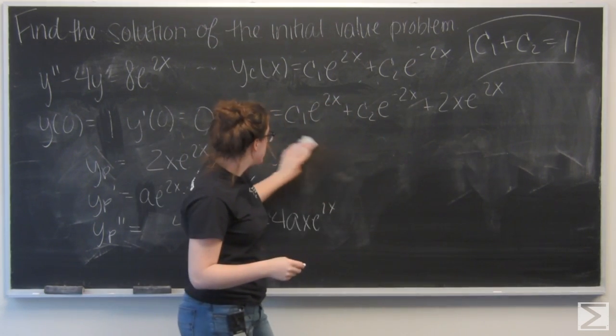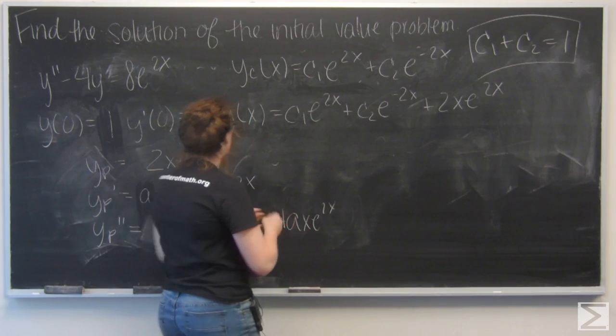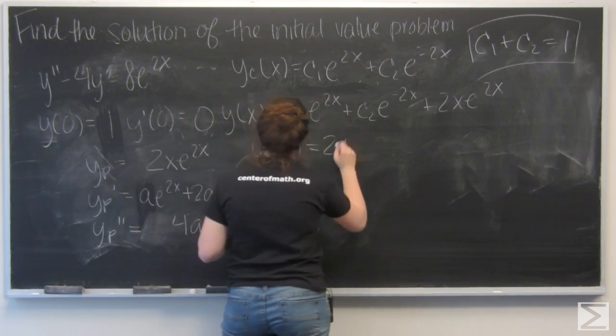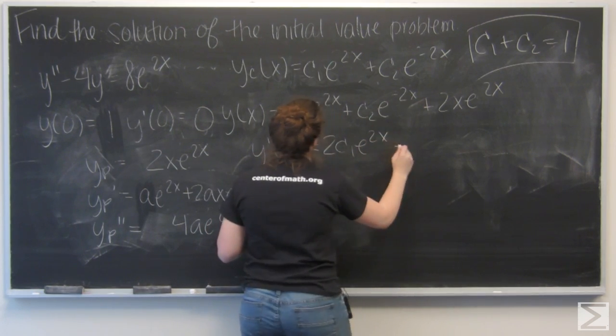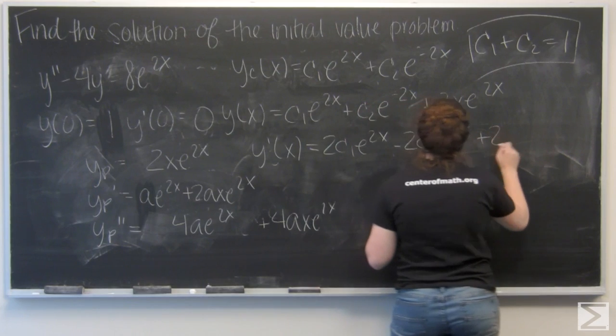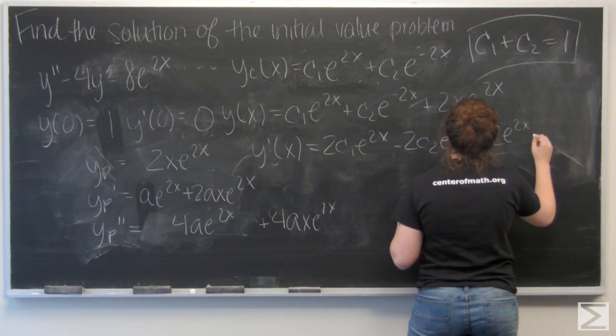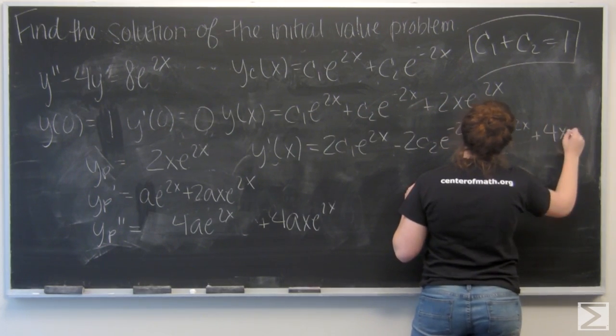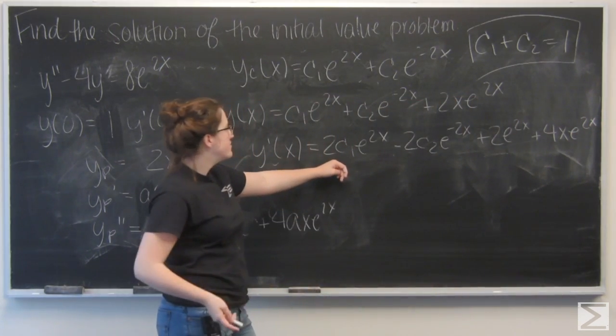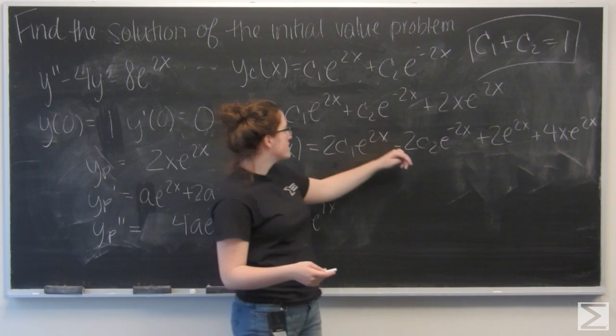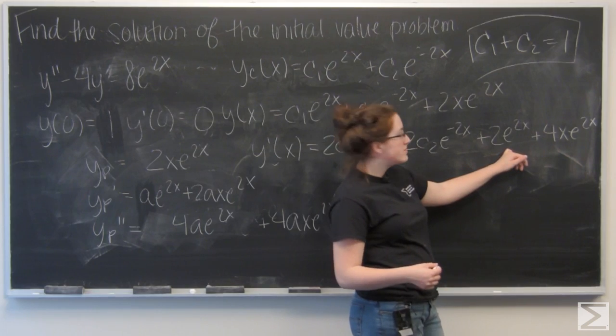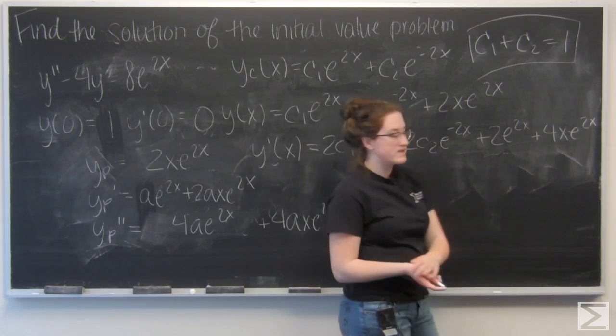Let's find the first derivative of y so that I can use the second initial condition. For the first term I get 2c1e to the 2x, the second term gives me negative 2c2e to the 2x, and the third term gives me 2e to the 2x plus 4xe to the 2x.